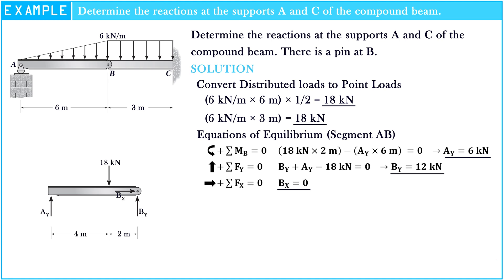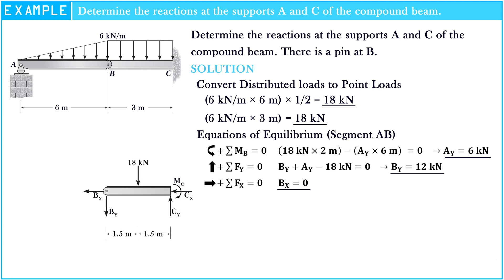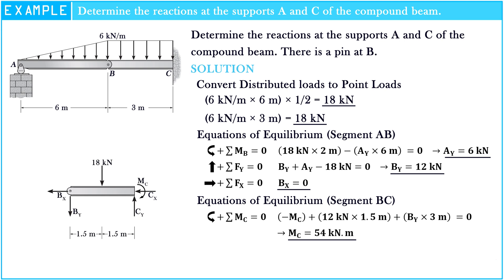Now we have some values of the supports. Next, we will find all the support values of the compound beam. Applying the moment equation of equilibrium about points B and C respectively: the sum of moments at point C equals 0, so negative moment at C plus 12 kN multiplied by 1.5 meters plus BY multiplied by 3 meters equals 0. Hence, the moment at C equals 54 kN·m.